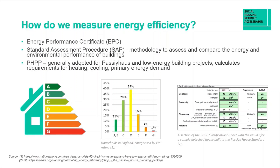So how is the energy performance of homes measured? Properties can benefit from an Energy Performance Certificate, or EPC rating, and this ranges from A, which is categorised as very efficient, all the way down to G, which is deemed the least efficient. 60% of UK homes are around EPC band D or lower, and houses with a C rating or higher are generally considered more comfortable for occupants and can be sold for up to 16% more.